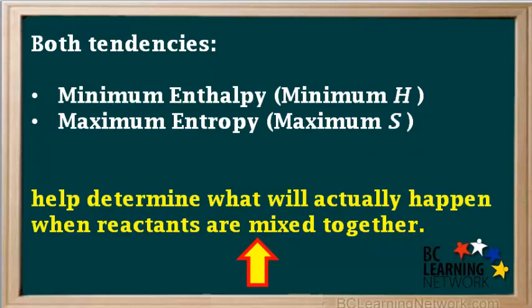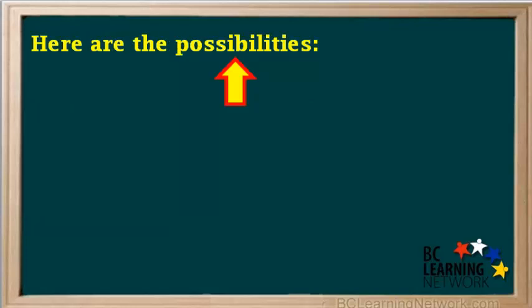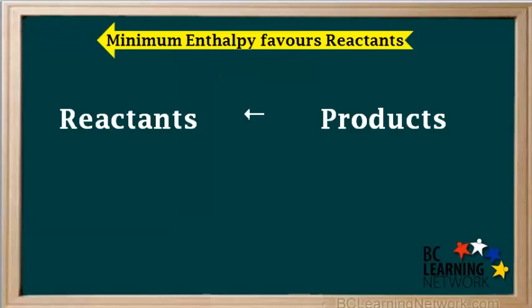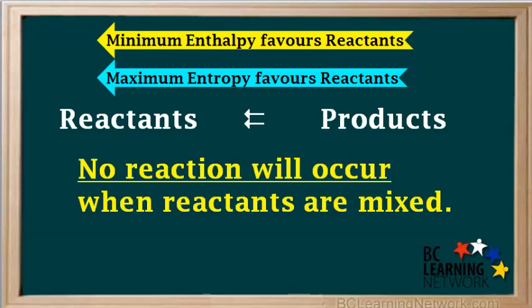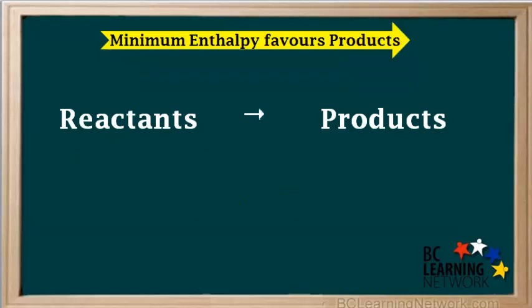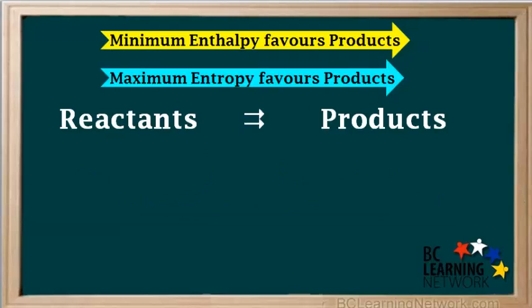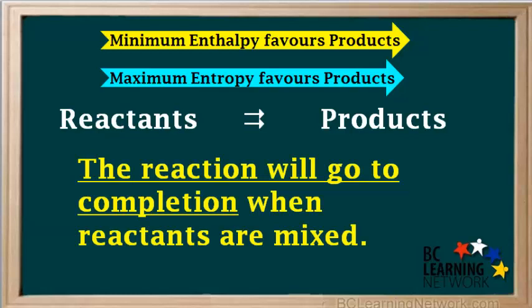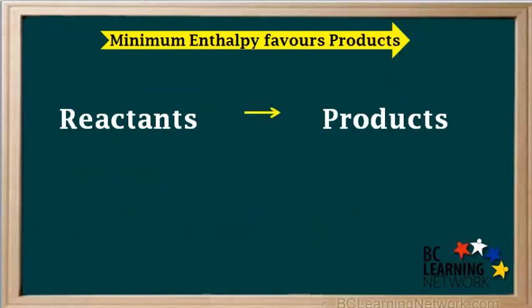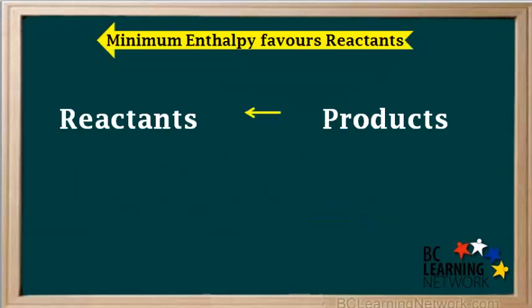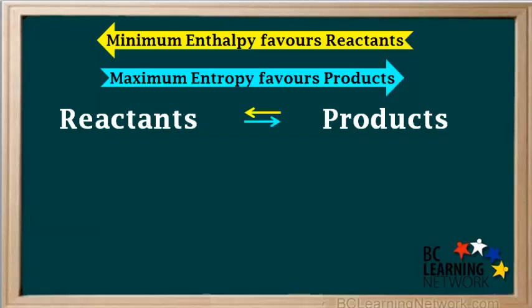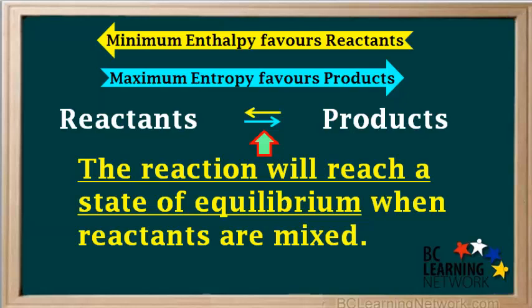Looking at both of these tendencies — the tendency toward minimum enthalpy and the tendency toward maximum entropy — they help determine what will actually happen when reactants are mixed together. If the tendency toward minimum enthalpy favors reactants, and the tendency toward maximum entropy also favors reactants, then there's no reason for a reaction to move away from the reactants, and when reactants are mixed, no reaction will occur. If minimum enthalpy favors products and maximum entropy also favors products, then the reactants will react completely and form products. If minimum enthalpy favors products and maximum entropy favors reactants, the reaction will reach a state of equilibrium. If minimum enthalpy favors reactants and maximum entropy favors products, the reaction will again reach a state of equilibrium. In an equilibrium state, there will be a mixture of reactants and products present.